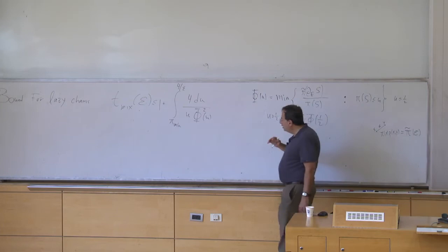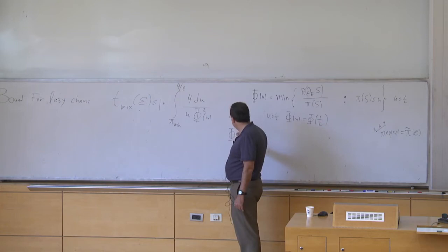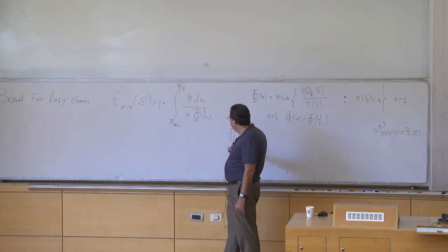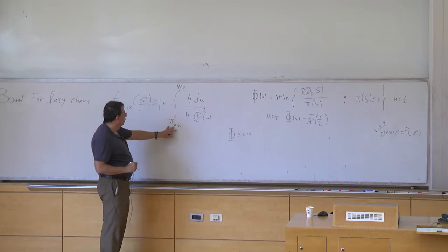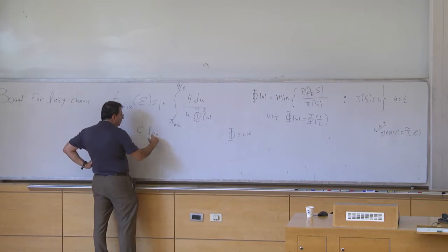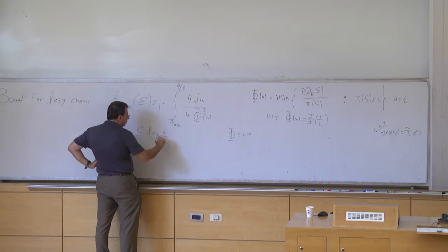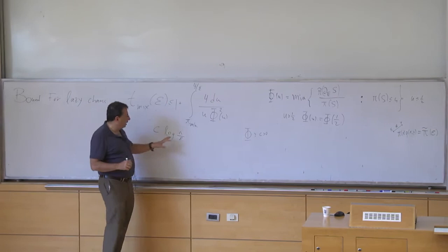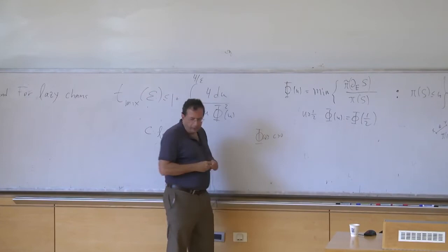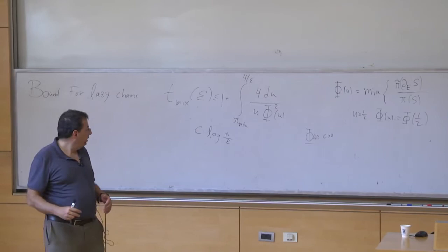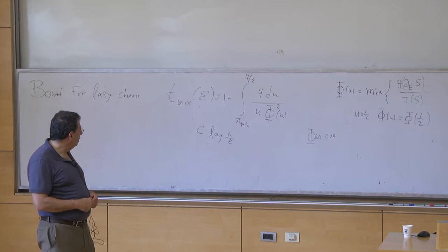The case of the Cheeger inequality is the case that phi is constant — phi is bounded below. Then the bound you get is a constant times log of n over epsilon. If you have a Cheeger inequality with conductance bounded below, you have an expander graph, the relaxation time is order one, and the mixing time is order log n. There's also some dependence on epsilon, and this captures it. Here n is the number of vertices, since pi_min is at least one over n squared for any random walk on a graph.